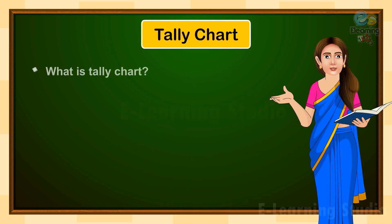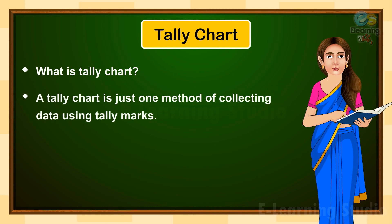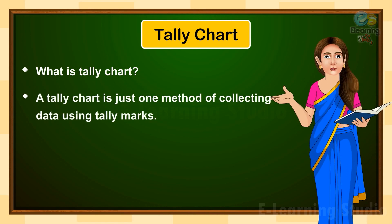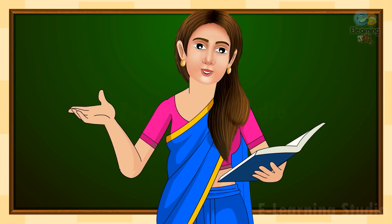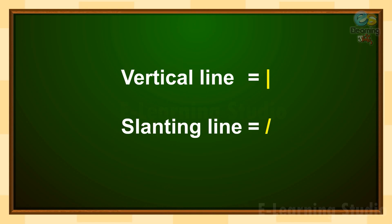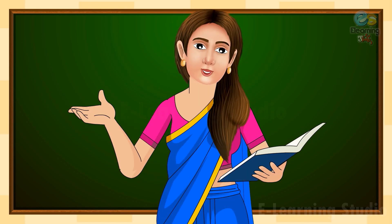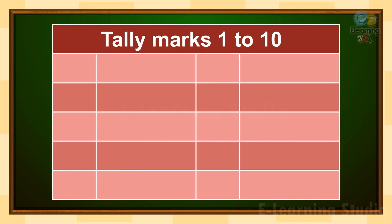What is a tally chart? A tally chart is a method of collecting data using tally marks. Tally marks are represented through vertical lines and a slanting line. Now I am going to tell you how we can represent the numbers 1 to 10 by vertical lines or slanting lines.